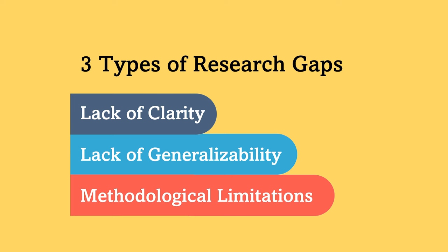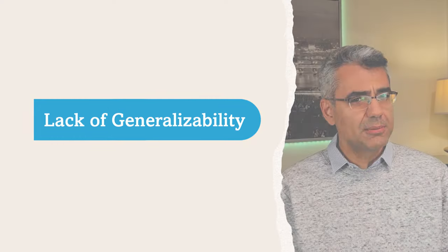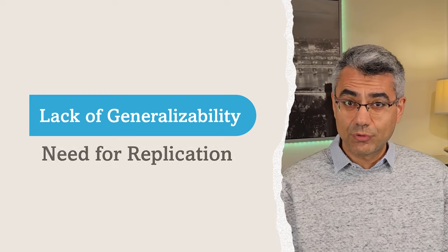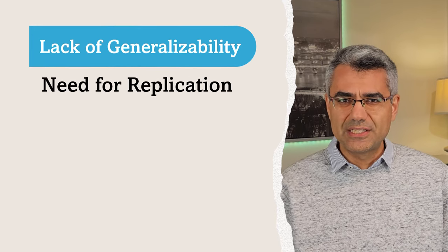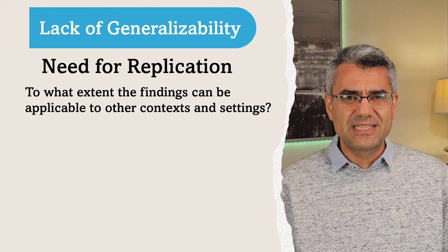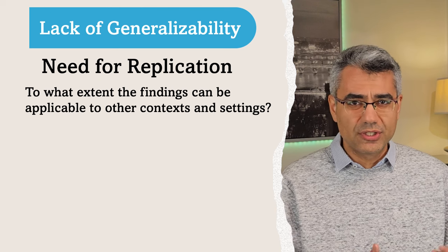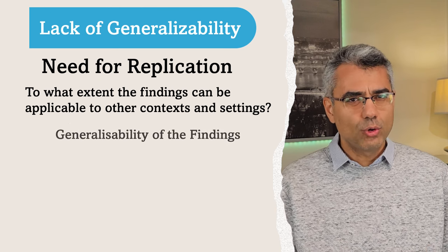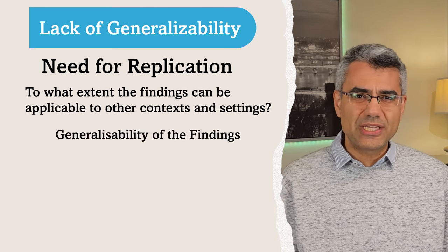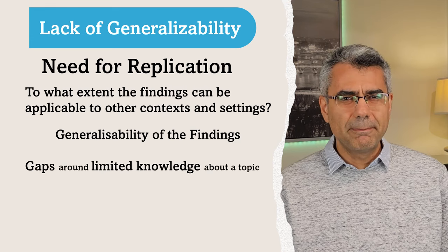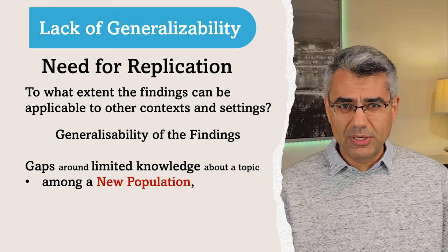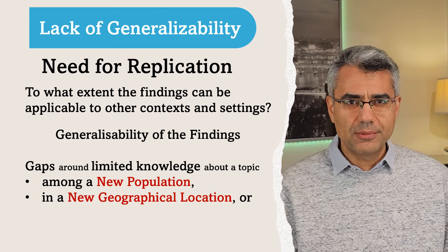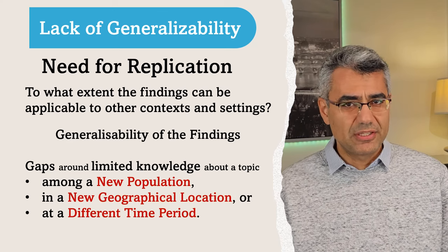The second common type of research gap arises from lack of generalizability of past findings and the need for replications. One of the common limitations of many studies is to what extent the findings can be applicable to other contexts or other settings — in other words, to what extent you can generalize the findings. These gaps are mainly around limited knowledge about the topic among new populations, in new geographical locations, or at different time periods.